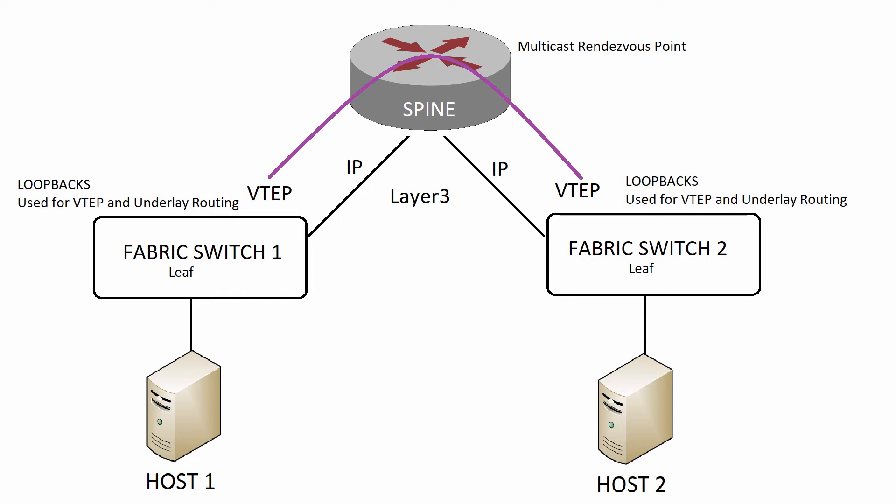In our earlier example, switch 1 didn't know the destination MAC address for host 2 and created a broadcast. VXLAN does exactly the same, but instead of flooding out a trunk port, it floods out its VTEP — the VXLAN tunnel endpoint. That VTEP takes the broadcast and propagates it using multicast. We need to configure multicast across our spine and leaf switches, with the spine acting as the RP. With the underlay network configured, we can now introduce VXLAN.